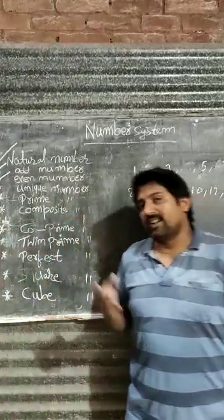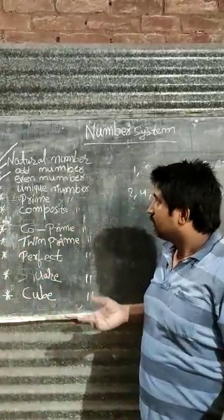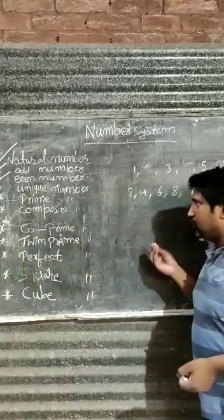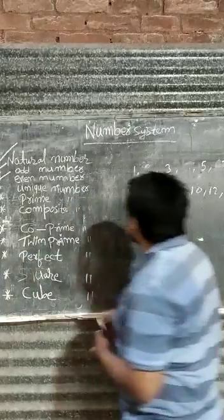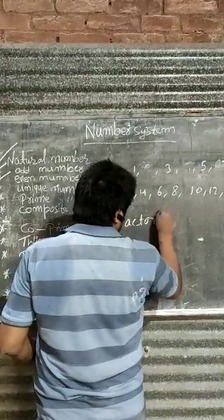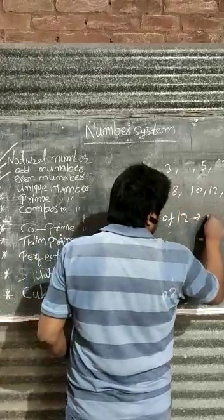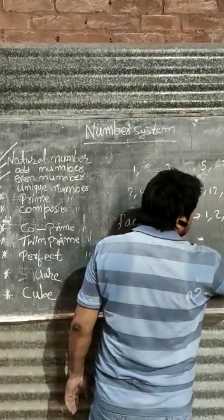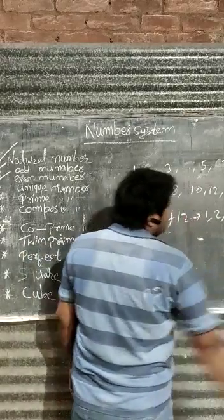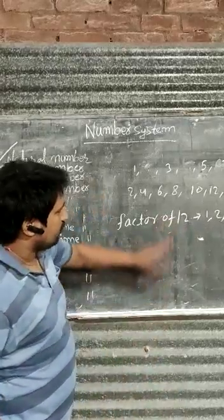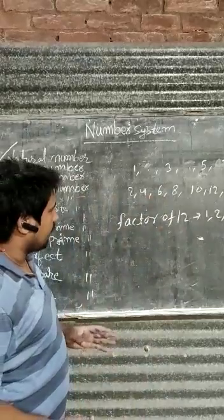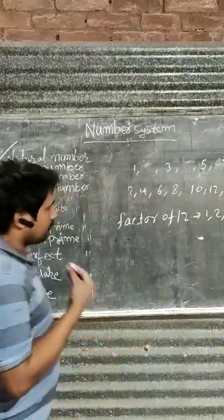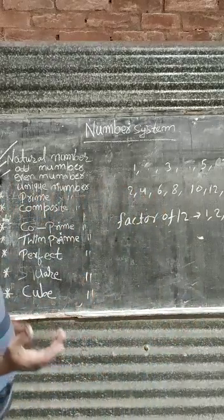You learned factors and multiples, so you know any number has a few factors. For example, factor of 12. Factor of 12 has 1, 2, 3, 4, 6, and 12. It means 12 has 6 factors.